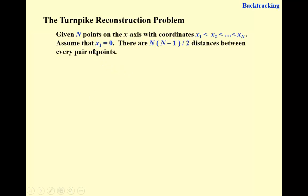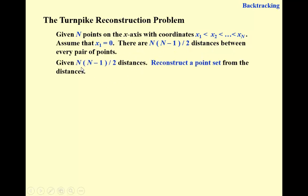Let's check the Turnpike Reconstruction Problem. We have endpoints on the x-axis with coordinates sorted in increasing order. To simplify, the first point is always placed at the origin — always zero. Given coordinates, it's simple to calculate all distances between every pair of points. But the reverse problem is hard: given that many distances, we must reconstruct the point set from those distances — finding all coordinates.